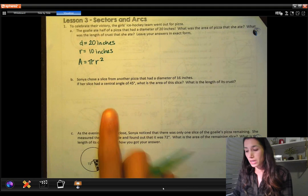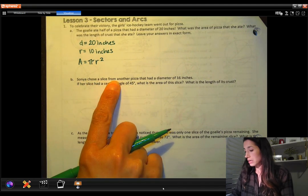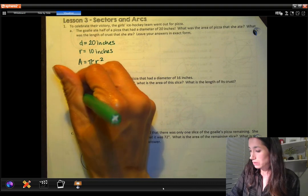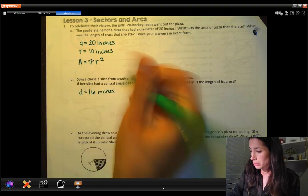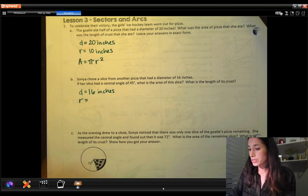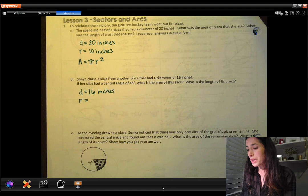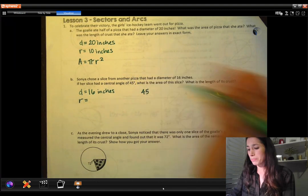In the next question, if we think about a 45. Sonia chose a slice from another pizza that had a diameter of 16. So let's write diameter is 16 inches. I'll let you write down what the radius is and our formula is still going to be the same. We're going to still use pi times the radius squared, but this time we're thinking of it in terms of a 45 degree piece.